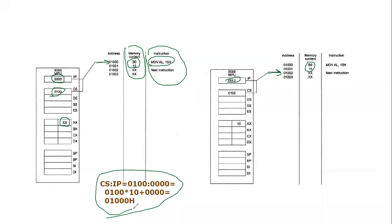IP is incremented by just two bytes because only two bytes were consumed in the last instruction. The effect of this instruction is that 15h is stored in the lower byte of the AX register, or the AL register. I hope you have understood this immediate operand addressing mode. If you still have any queries or confusion, you can post those in the comment section. Thank you so much for listening.